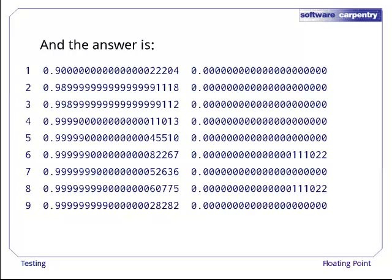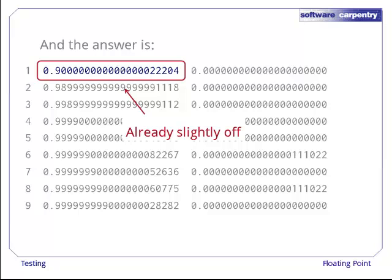Here's our answer. The first column is the loop index. The second, what we got by totaling up 0.9, 0.09, and so on, and the third is the difference between that number and what we got by subtracting from 1. The first thing you should notice is that the very first value contributing to our sum is already slightly off.